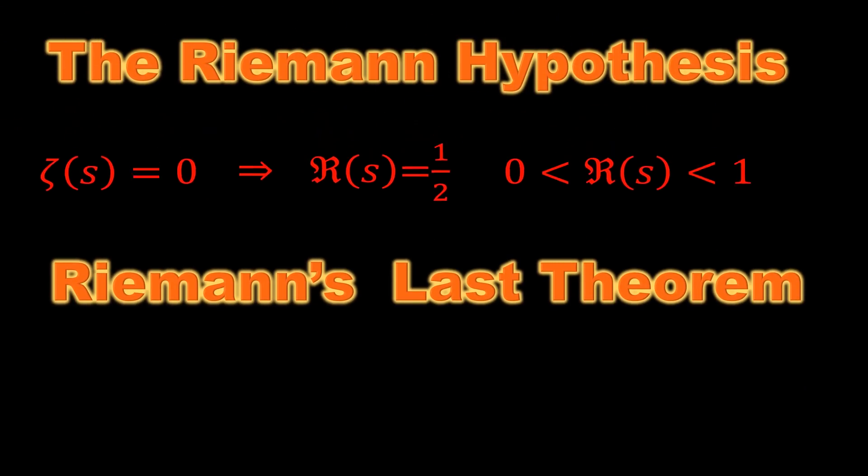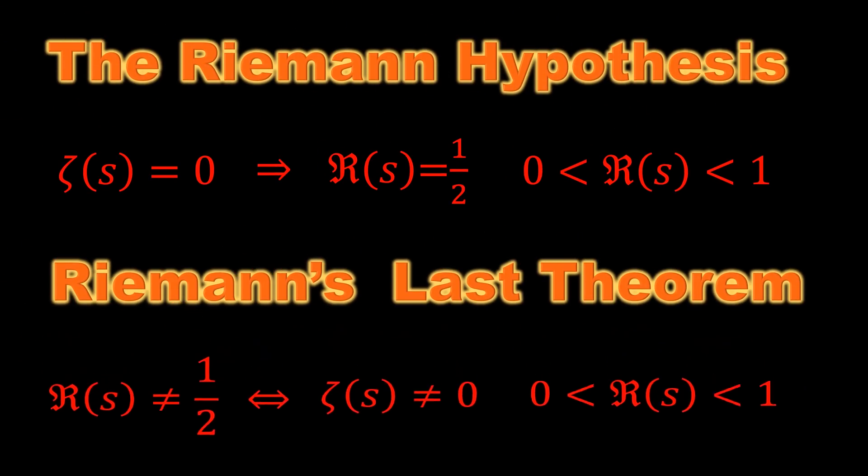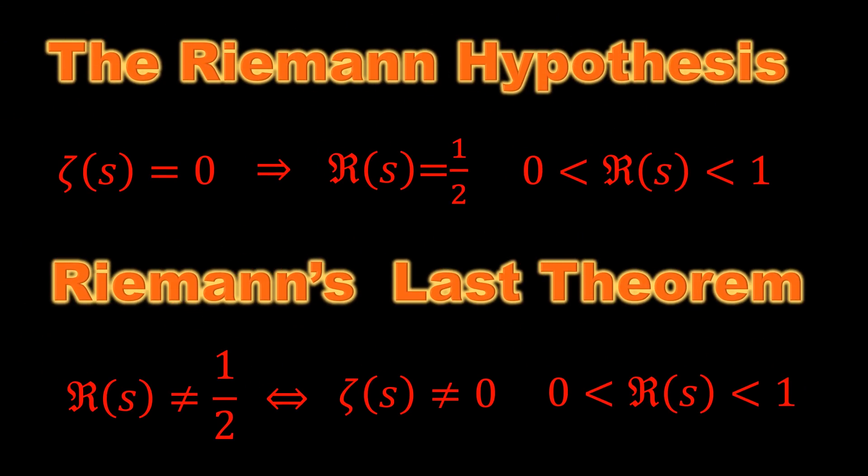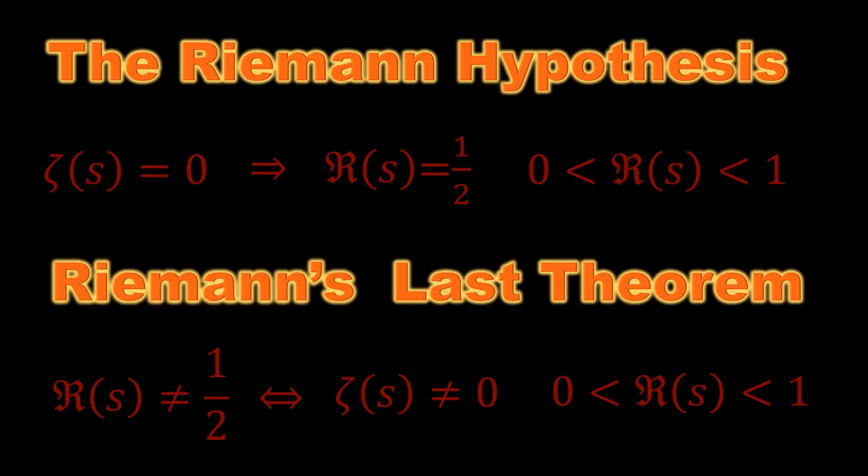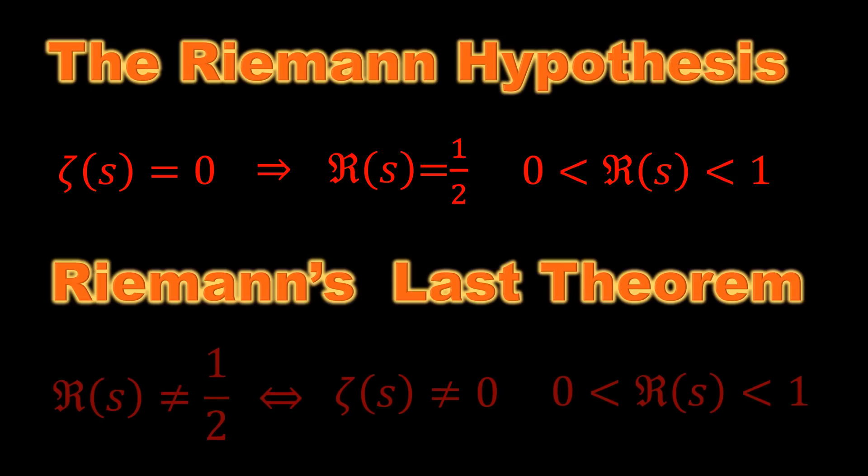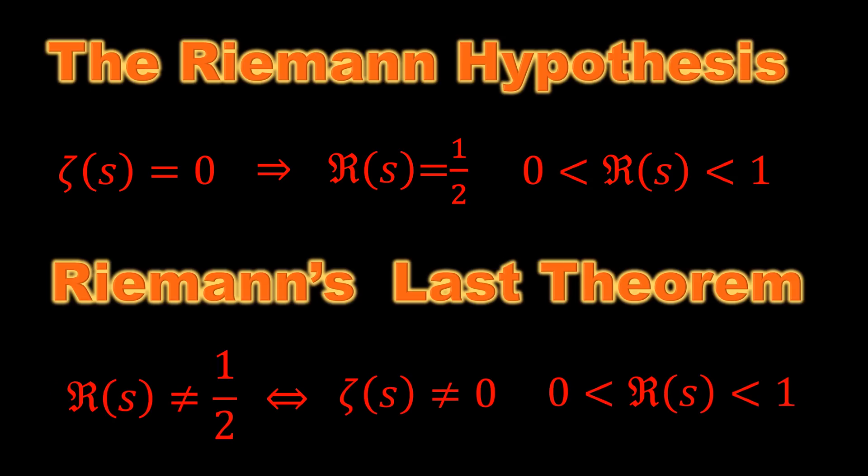This is the Riemann hypothesis, and we want to make a small change as you see and rename it as Riemann's last theorem. Riemann's last theorem has a two-way connection, meaning that if the real part of s is not equal to one-half, the zeta function cannot be zero in this region, and vice versa.